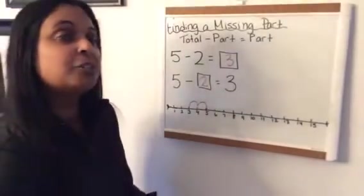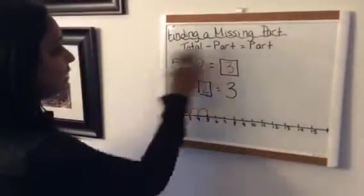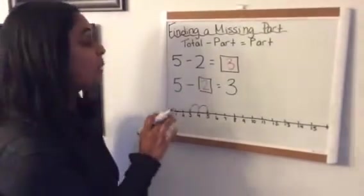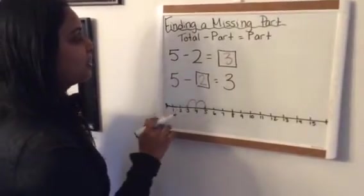I can also use my fact families to help me. I can see that these two number sentences are in the same fact family. I know that because they're using the same three numbers, five, two, and three.